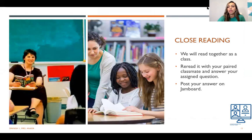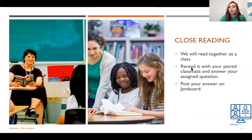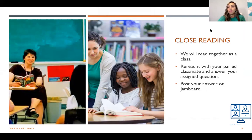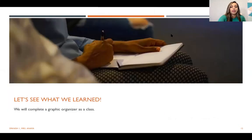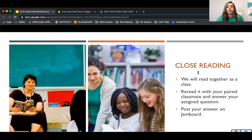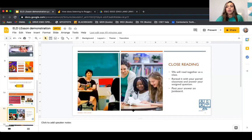Now we're moving to our close reading activity. We will first read together as a class, then you will re-read it with your partner and answer your assigned questions on Jamboard. I emailed you a copy of the PDF in case you want to print it out, but I'll also have it on screen. Go ahead and read it with your partner.